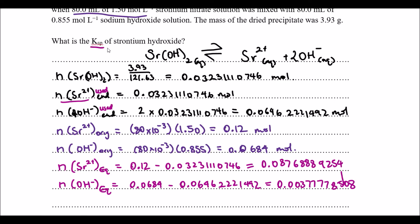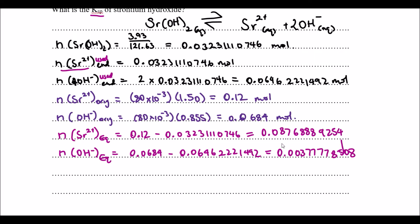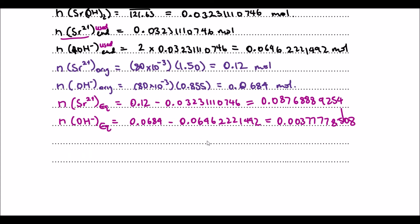Now to find the Ksp, we need the concentration of the two chemicals at equilibrium. So we have the number of moles of the chemicals at equilibrium, but we don't have the concentration. So the next step is to find the concentration, and then we put it in our equilibrium expression to find Ksp.